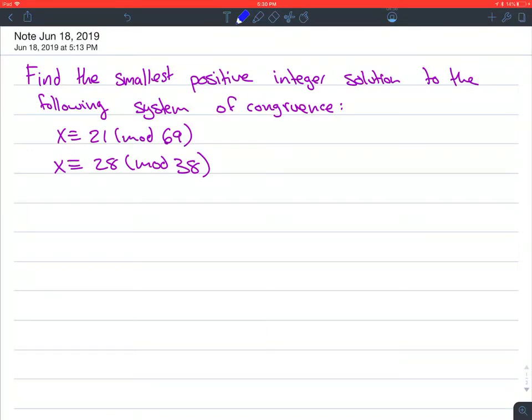Alright, what's up nerds? So in this question, it's saying find the smallest positive integer solution for the following system of congruence. So we have x congruent to 21 mod 69, and then 28 mod 38.